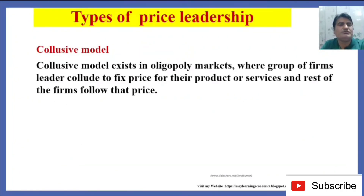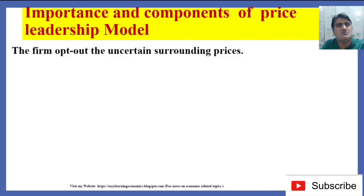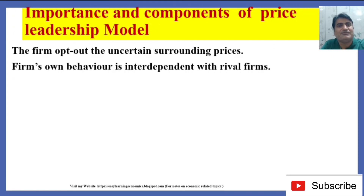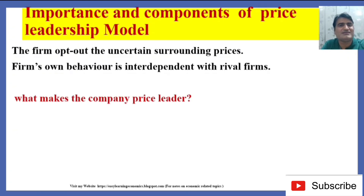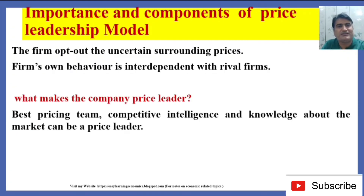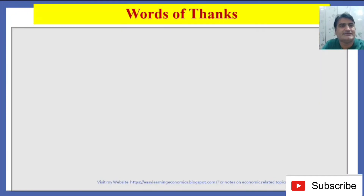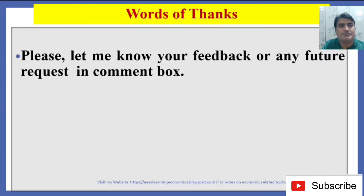Collusive Model: The collusive model exists in oligopoly markets where groups of firms collude to fix prices for their products or services and the rest of the firms follow that price. The importance of the price leadership model is that firms can opt out of or reject uncertainty surrounding prices, and a firm's own behavior is interdependent with rival firms. What makes a company a price leader? A best pricing team, competitive intelligence, and knowledge about the market can make a firm a price leader.